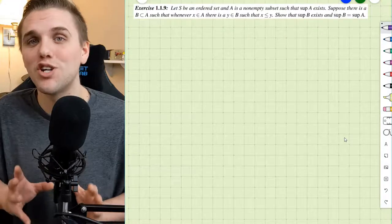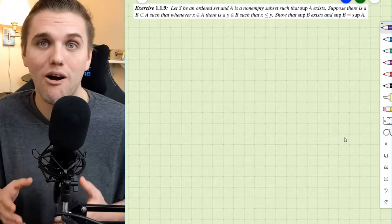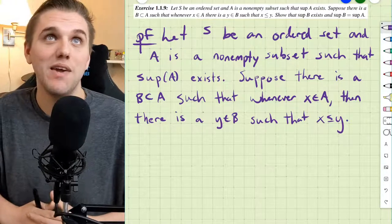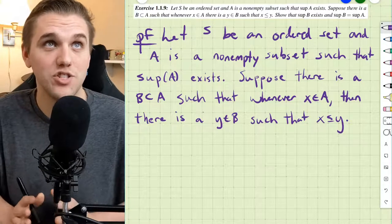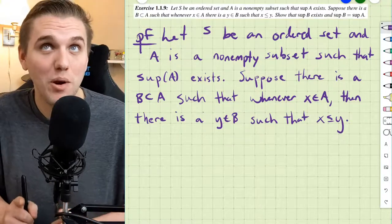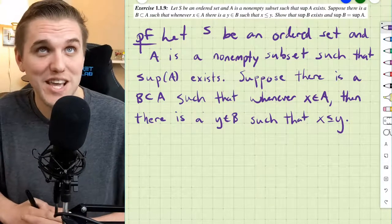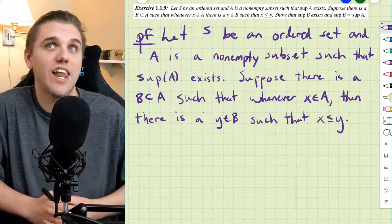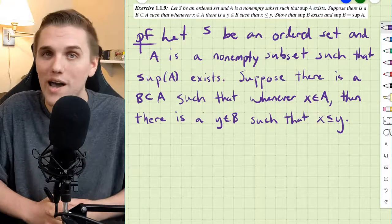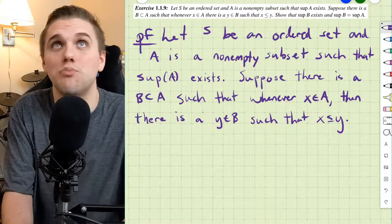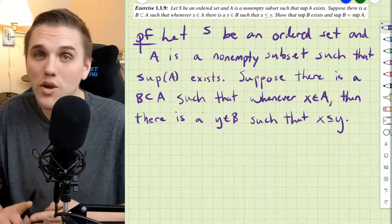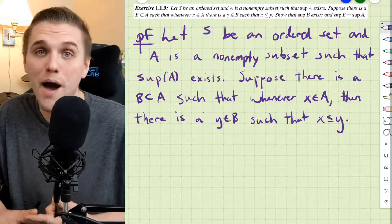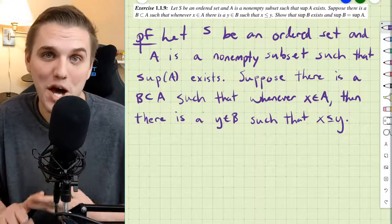Alright, so let's first start this proof by listing off our hypotheses. Let S be an ordered set and A be a non-empty subset such that the supremum of A exists, and suppose that there is a B that's a subset of A, such that whenever X is in A, then there is a Y in B such that X is less than or equal to Y. We need to show that the supremum of B exists — meaning B has an upper bound and among all of the upper bounds, there is a least upper bound.